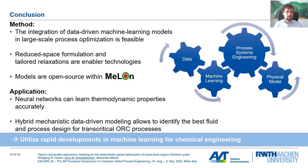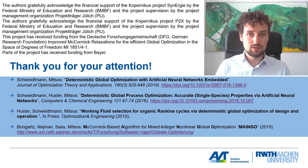To summarize: the integration of data-driven machine learning models into large-scale process optimization is feasible, and the reduced space formulation with tailored relaxations are key enabling technologies. All models are open-source and available within Melon. From the application perspective, neural networks can learn thermodynamic properties to high accuracy, and hybrid mechanistic data-driven modeling allows identification of the best fluid and process design for transcritical ORCs. We hope to leverage rapid developments in machine learning for chemical engineering going forward. Thank you very much for your attention, and I hope to see you at the conference soon.